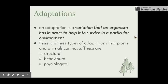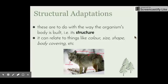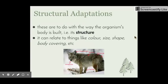There are three types of adaptations that plants and animals can have, broken into categories: structural, behavioral, and physiological. Starting with structural adaptations, these are adaptations to do with the way that an organism's body is built — its structure. This can relate to things like its color, size, shape, and what type of body covering it has.